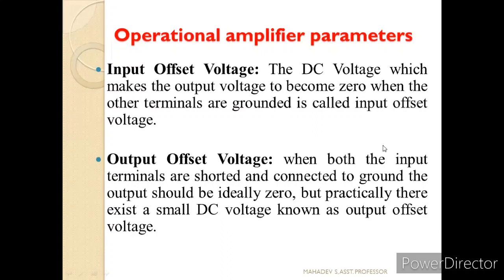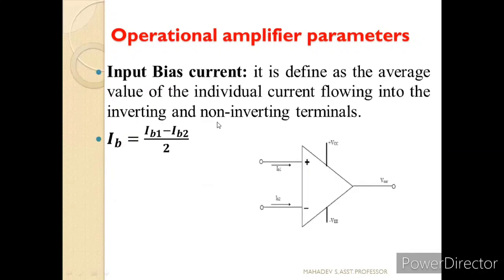Other operational amplifier parameters include input offset voltage — the DC voltage which makes the output voltage become 0 when the other terminals are grounded. Similarly, output offset voltage: when both input terminals are shorted and connected to ground, a small DC voltage appears at the output — practically it should be 0 but due to practical conditions a small DC voltage exists. Input bias current is defined as the average value of individual currents flowing in the inverting and non-inverting terminals: IB equals (IB1 plus IB2) divided by 2.